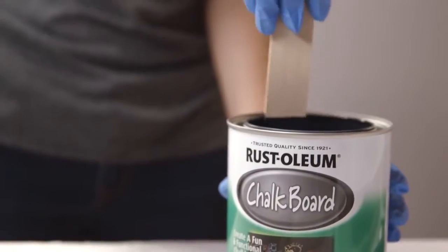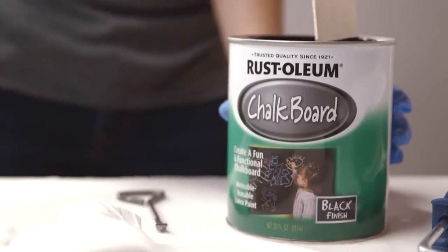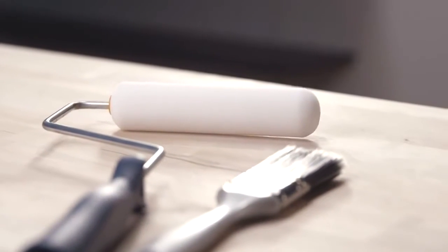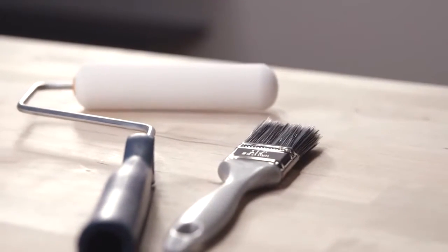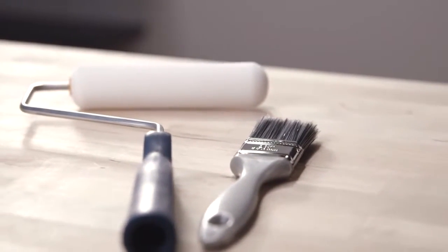Start by stirring the chalkboard paint thoroughly. For best results, apply the paint using a dense foam roller. Though not the preferred method, you can also use a quarter inch to three-eighth inch nap roller or good quality synthetic brush.